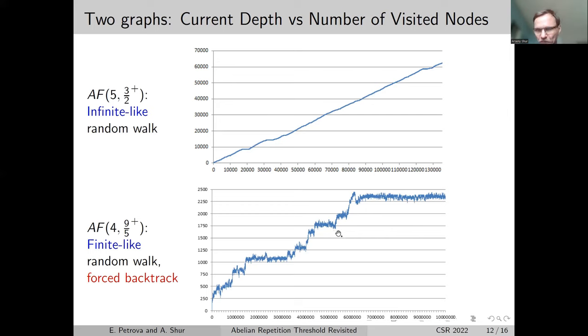In the second case, we got stuck. You can see that here it's 10 million nodes visited, and maximum length is below 2,500. This is in spite of multiple use of forced backtrack, a technique to improve the performance of random search. We suppose that this language is finite.